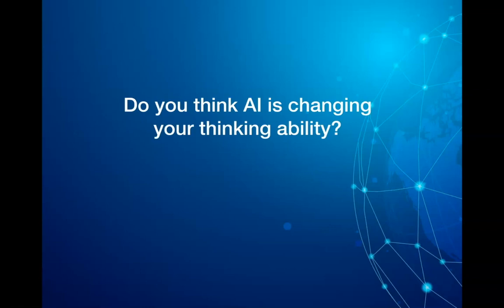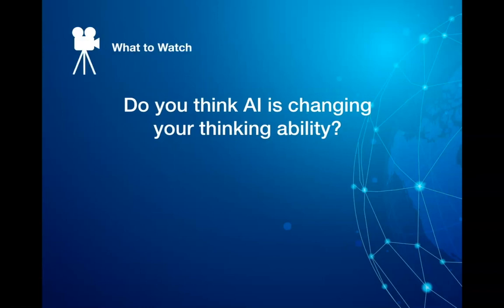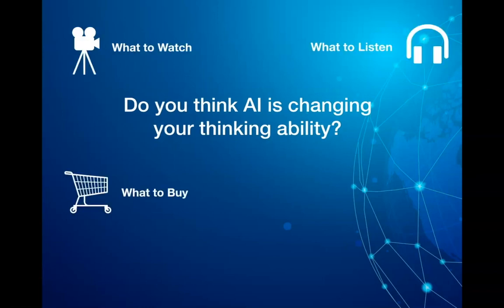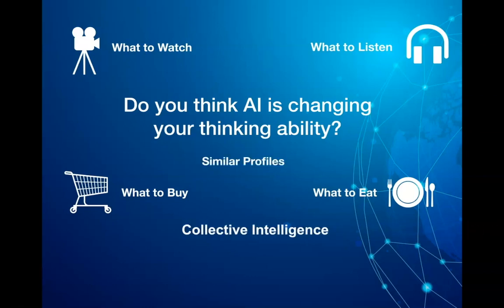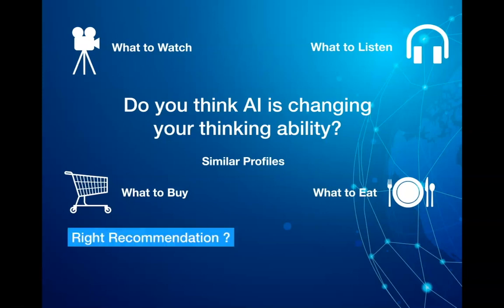Let's start with a few questions. Do you think AI is changing your thinking ability? From applications recommending what movies to watch, what songs to listen to, what to buy, what to eat, what ads you see — and the list goes on. All are driven by applications learning from you or delivering information through collective intelligence — for instance, people like you, location-based, and so on. But have you ever thought: are you getting the right recommendations, or are you just consuming the information as is and adapting to it?